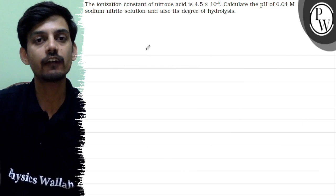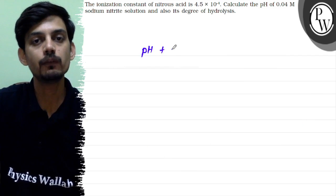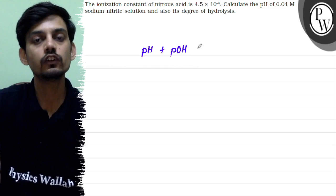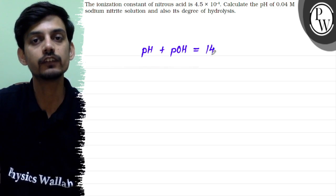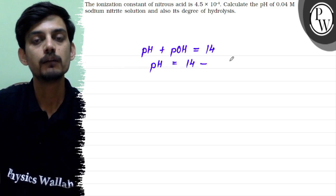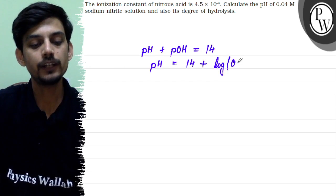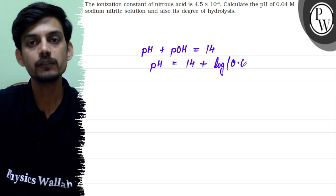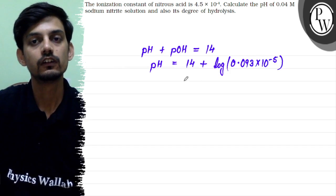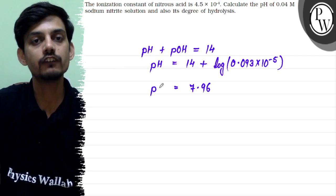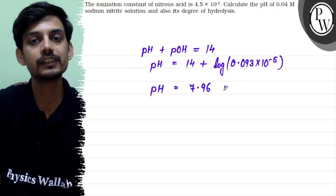Because in any aqueous solution, pH and pOH, their summation at normal room conditions is 14. So pH will be 14 - pOH value which is log, minus minus becomes plus, 0.093 × 10^-5. On solving this will give 7.92. So the pH of the salt sodium nitrite will be 7.96.